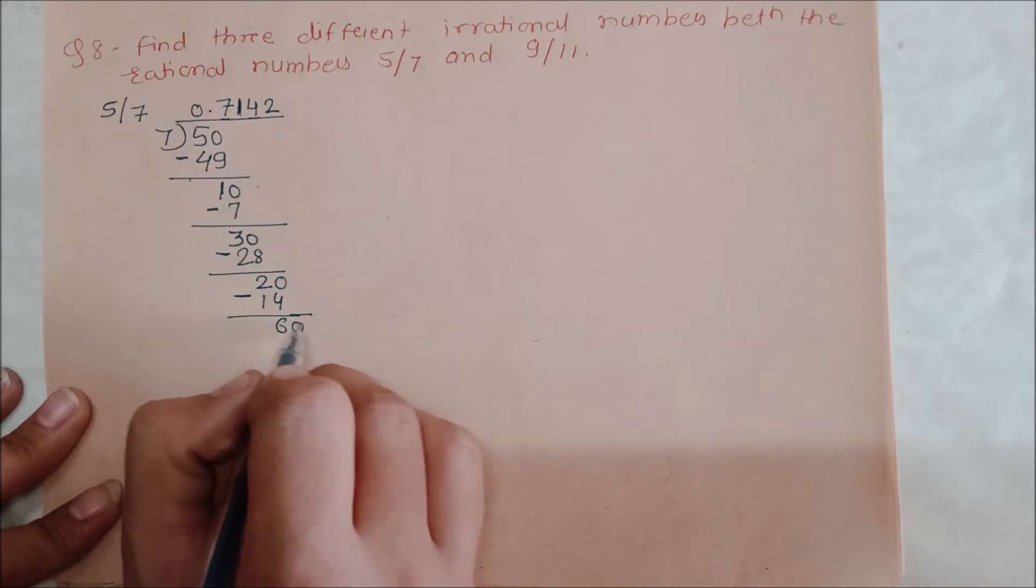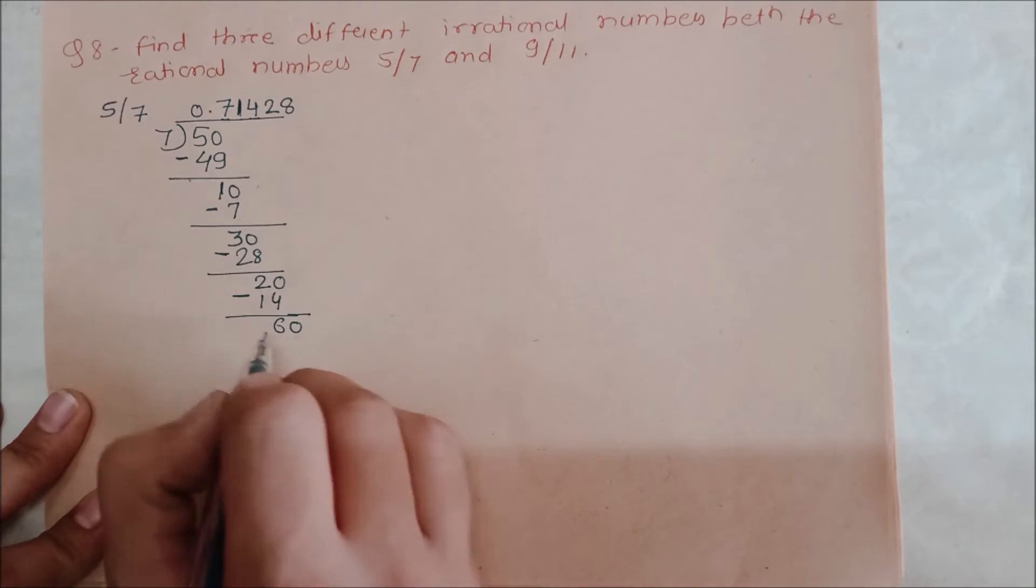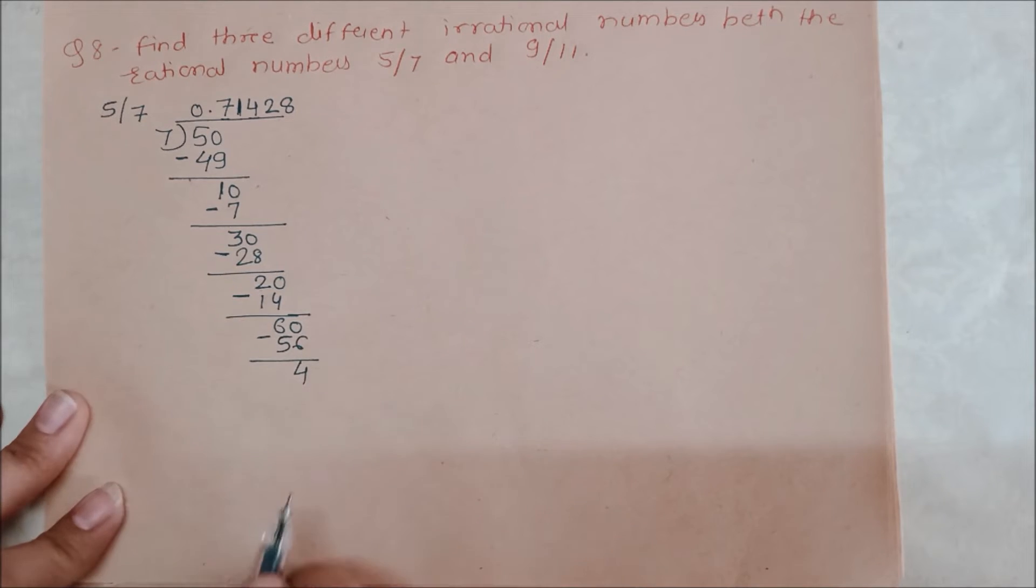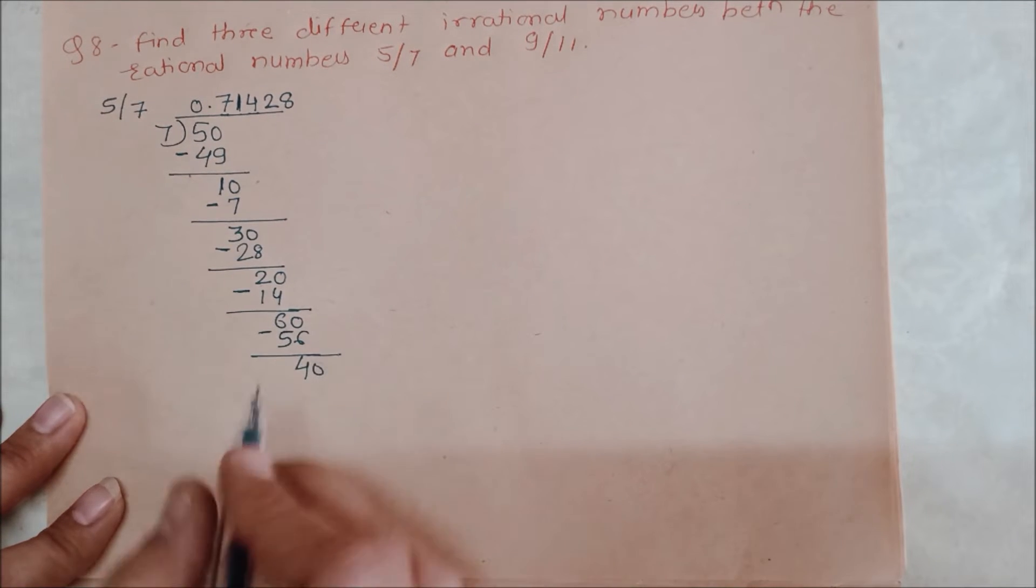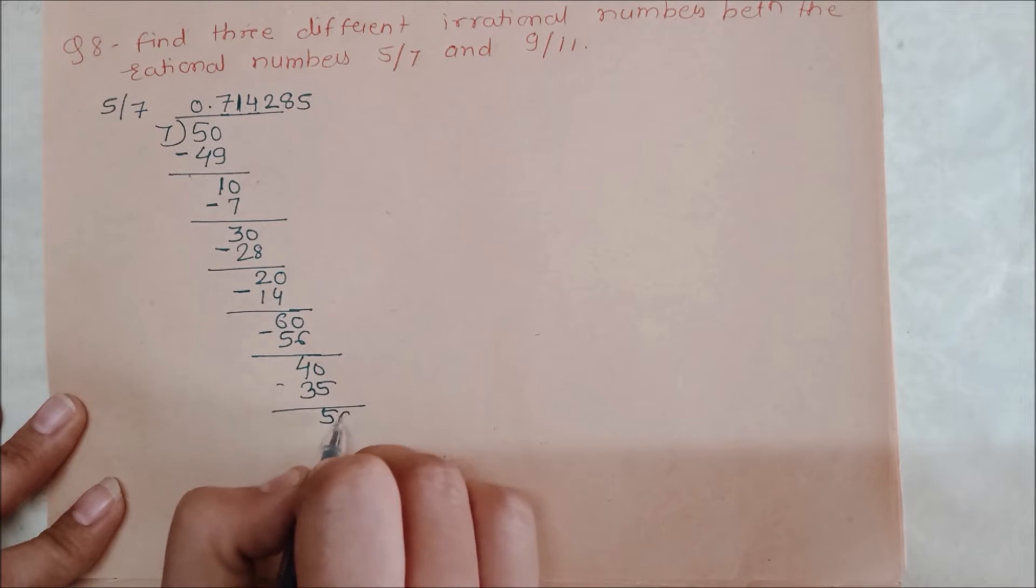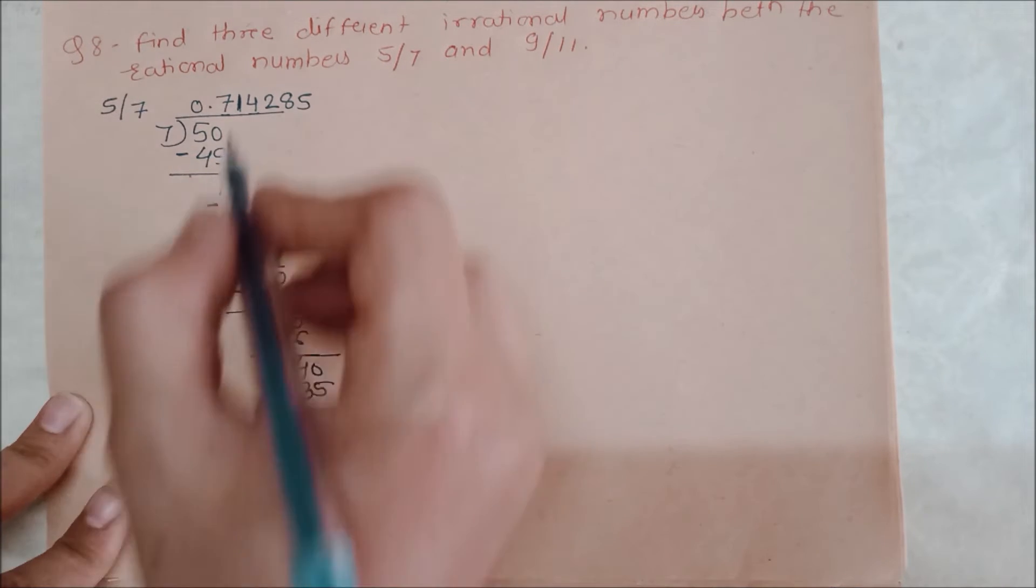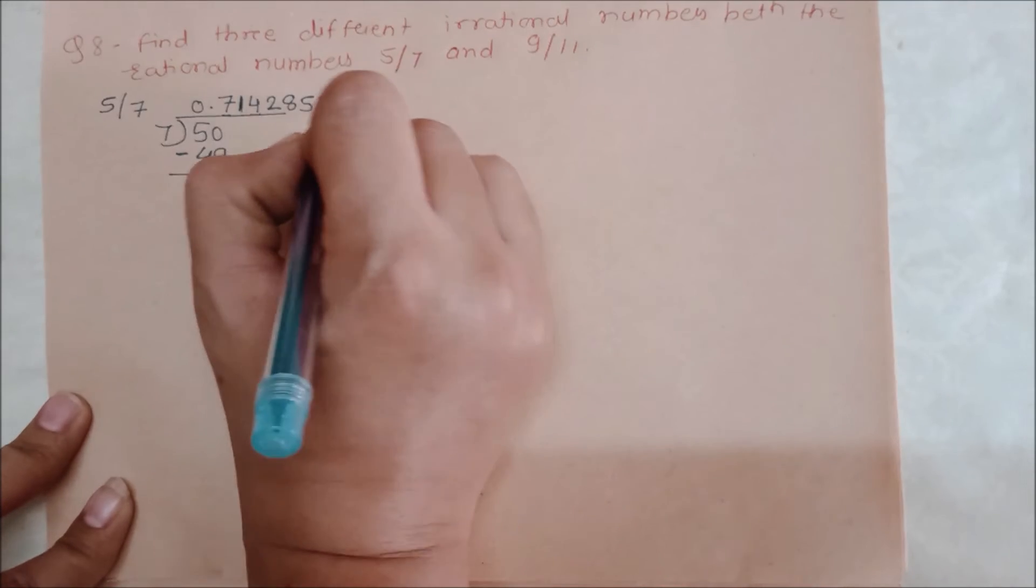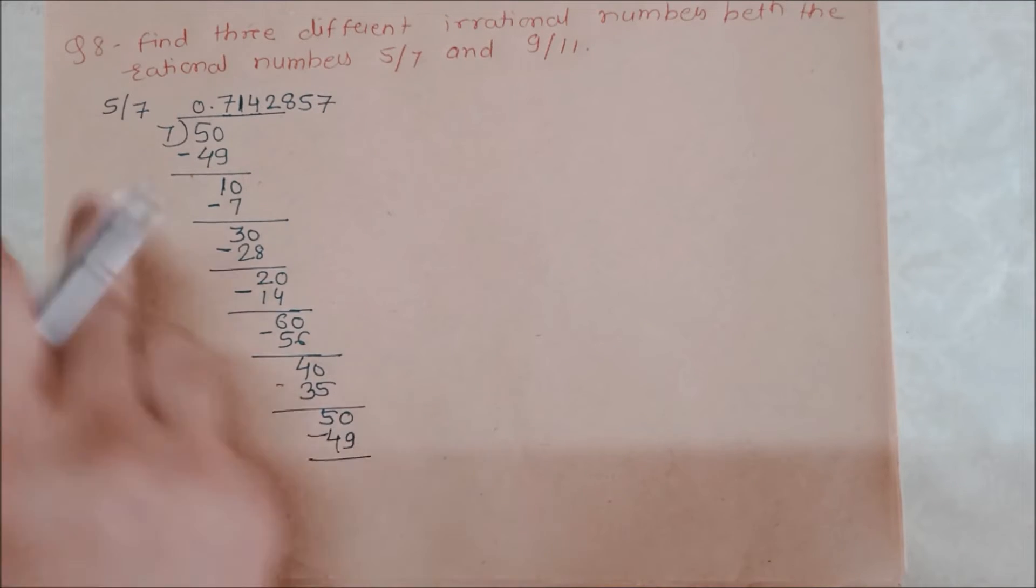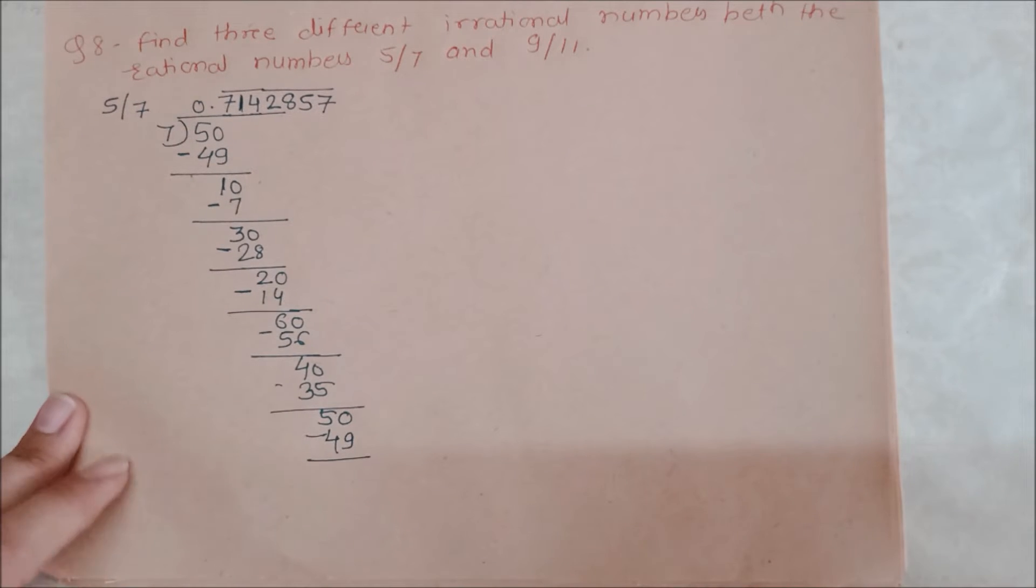Again I have 0. 7's table is 60, what will be? 7 times 8 is 56, minus 4. Again I have 0. 7 times 5 is 35, then I have 5. Again, what will be? 7 times 7 is 49, right? Again 50 is coming, so 7 times 7 is 49, and this is the term which is repeating. So this number is our whole number, it will repeat. So here 5 by 7 is 0.714285857...